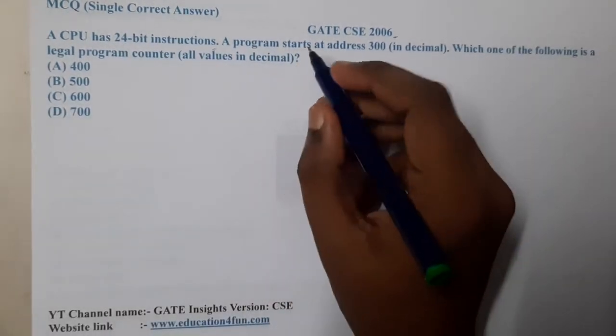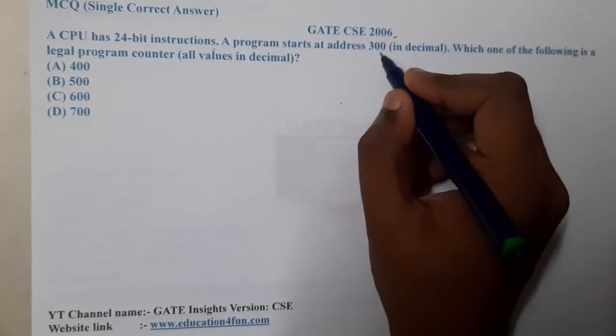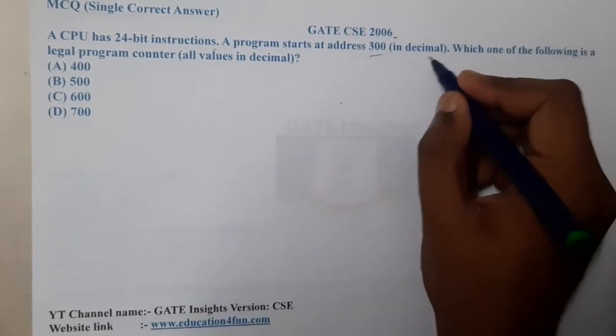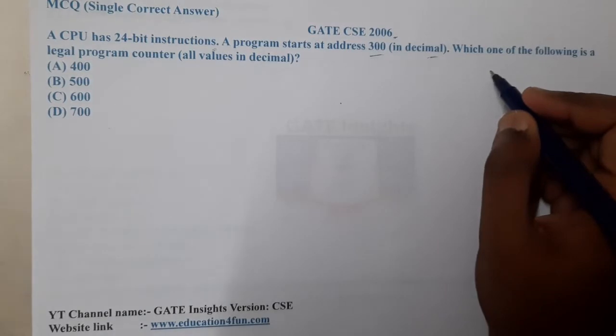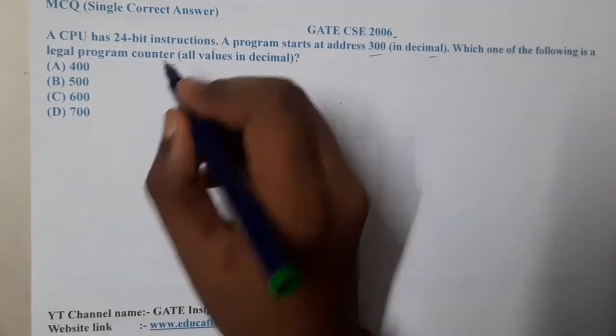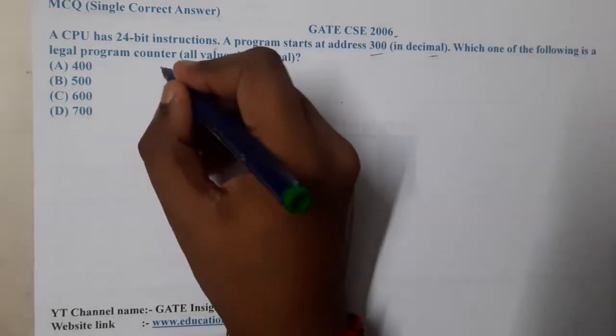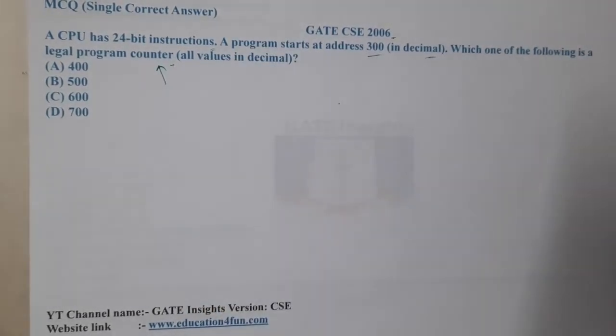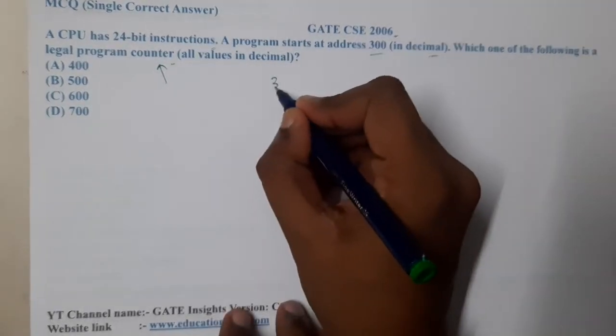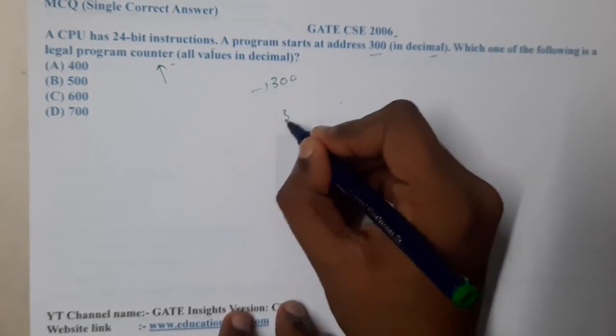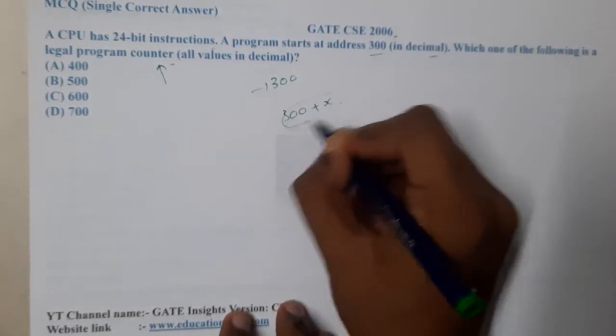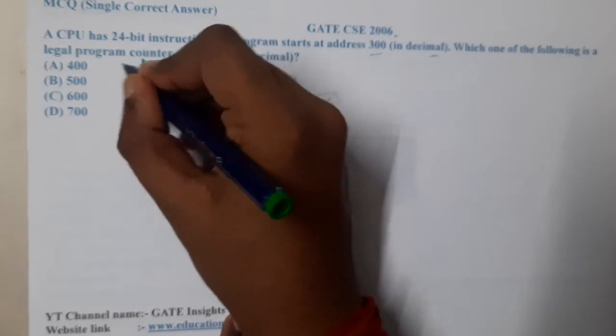A computer program starts at address 300 in decimal. Which one of the following is a legal program counter value? Basically, what does a program counter have? If a current instruction execution address is 300, the next address value will be there in the program counter.